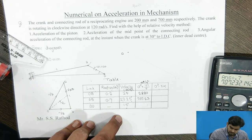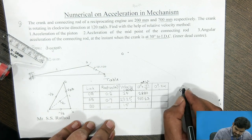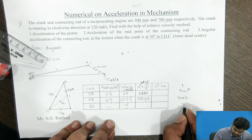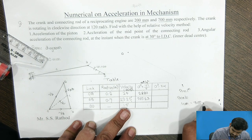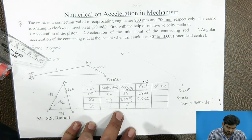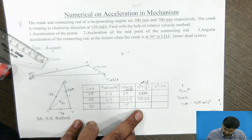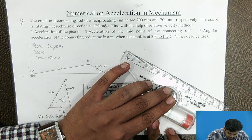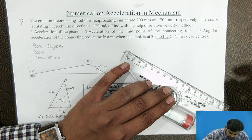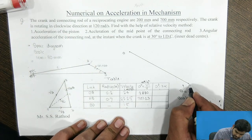We take a scale of 1 cm equal to 300 m/s² for drawing the acceleration diagram. By this scale, the magnitude of OA becomes 2880 divided by 300 equals 9.6 cm. So we locate the A point at a distance of 9.6 cm.